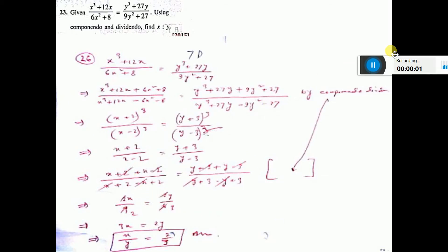Number 23 we can do now. First I copied the given one. Then apply componendo-dividendo: numerator plus denominator by numerator minus denominator, written here. Here also numerator plus denominator by numerator minus denominator.